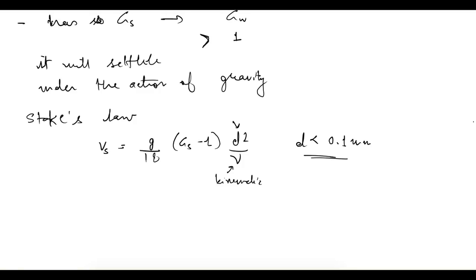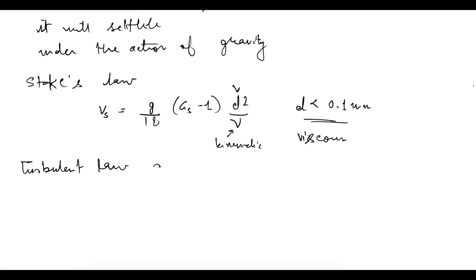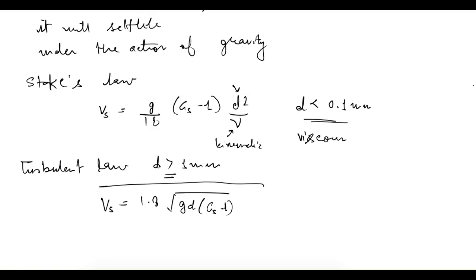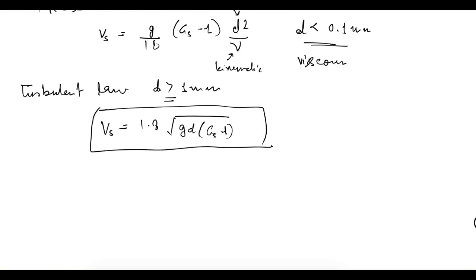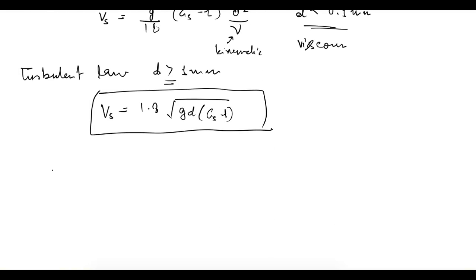Stokes' law applies to viscous flow. If the flow is turbulent — which occurs when particle size is greater than 1 mm — it causes hindrance in settlement, and in that case the velocity of settlement is given as: Vs = 1.8 × √(g × d × (GS − 1)).